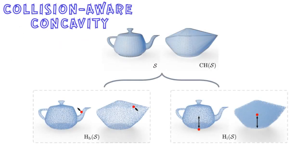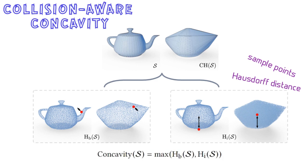In this work, we propose a novel collision-aware concavity metric that examines the component from both the boundary surface and shape interior. Specifically, for each shape and its convex hull, we sample points from both the boundary surface and the interior, and we then calculate their Hausdorff distances, respectively. The proposed concavity then considers the distances from the two pairs of point clouds.